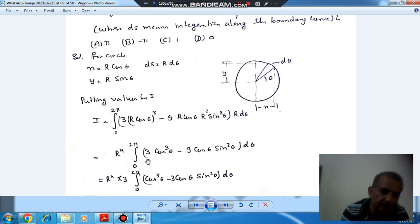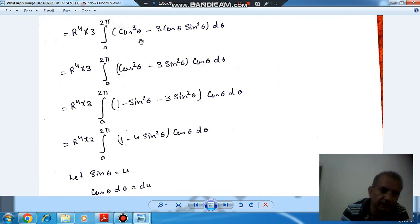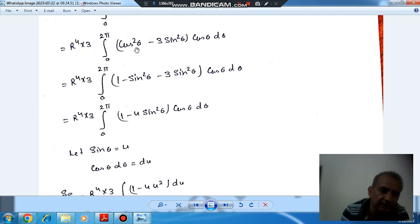Or further it can be modified by taking 3 out of bracket. Now we can take cos as common: cos θ(cos²θ - 3 sin²θ) dθ. Or we can write this cos²θ as 1 - sin²θ. So it will be (1 - 4 sin²θ) cos θ dθ.